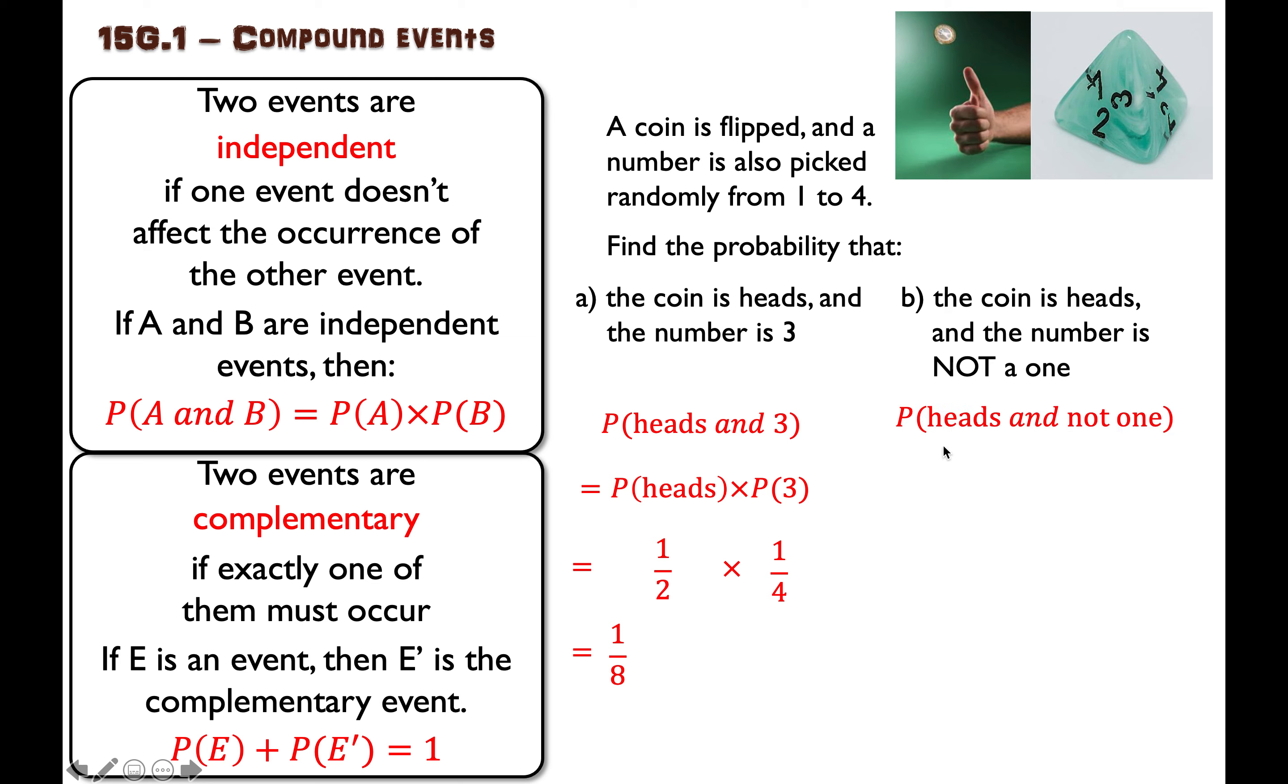So we can say the probability of heads and not one is the probability of getting a heads on the coin and the probability of getting not a one. Do you notice that I've used a little dash here to show that it is the complement of getting a one?